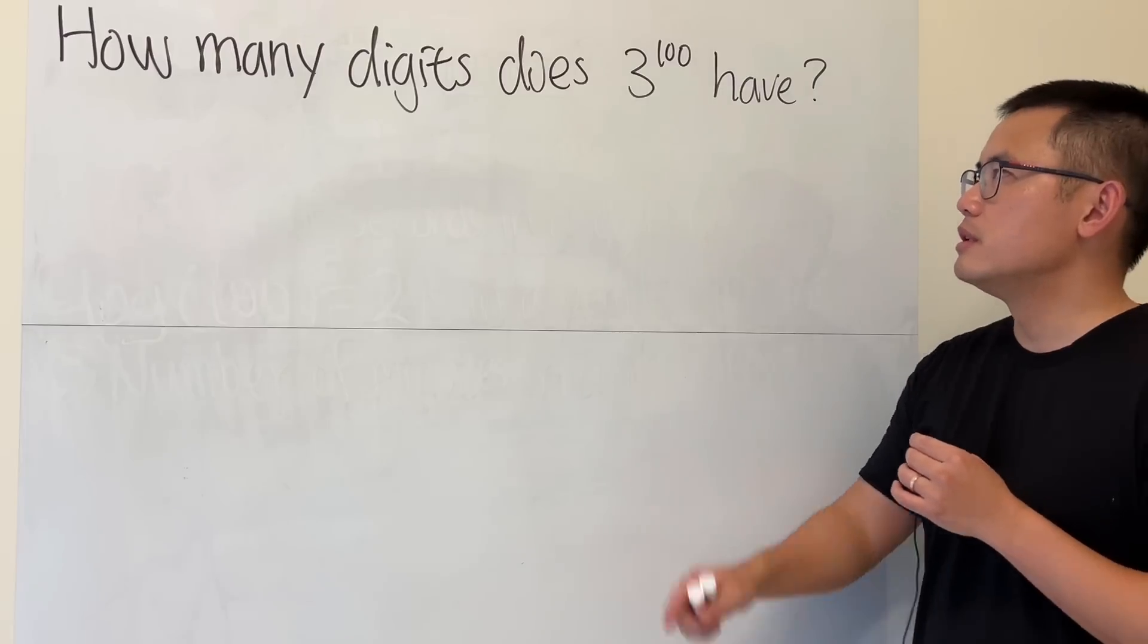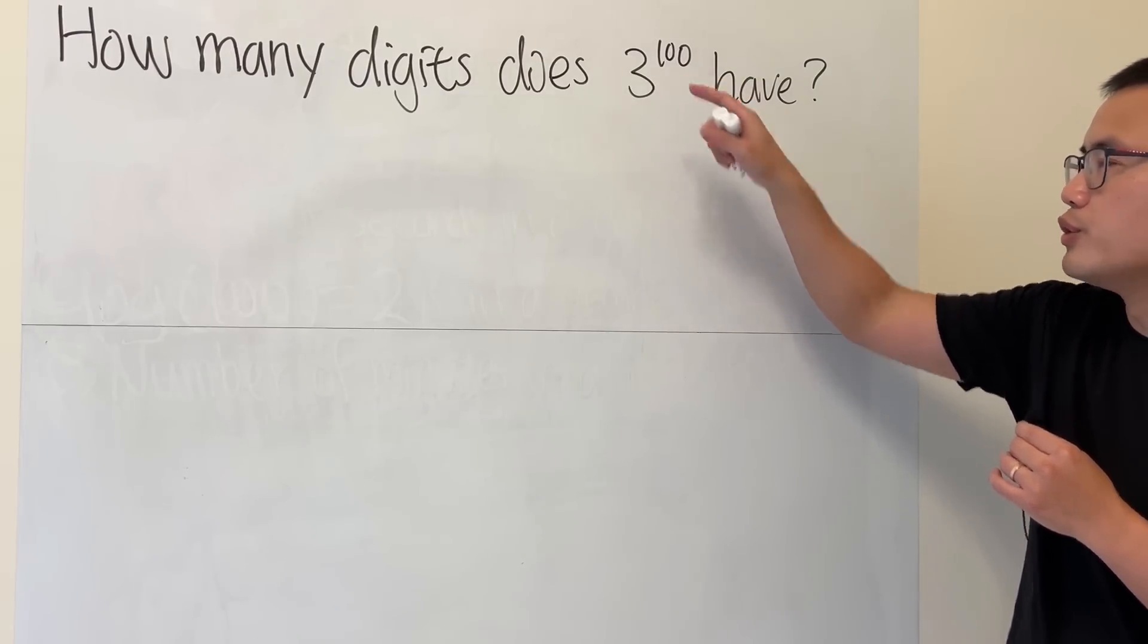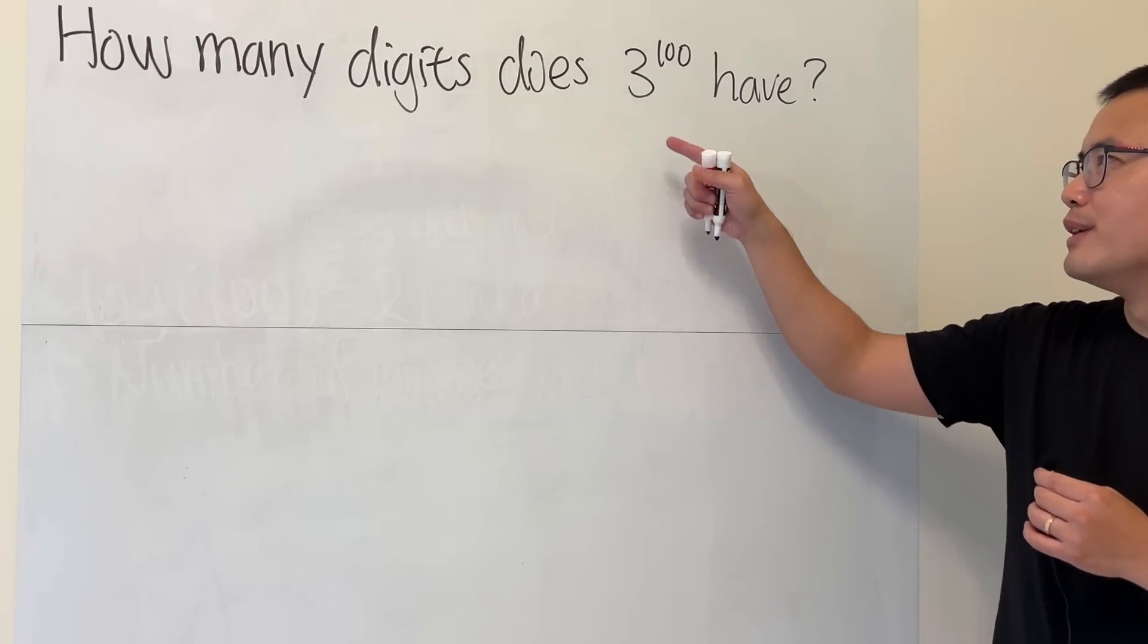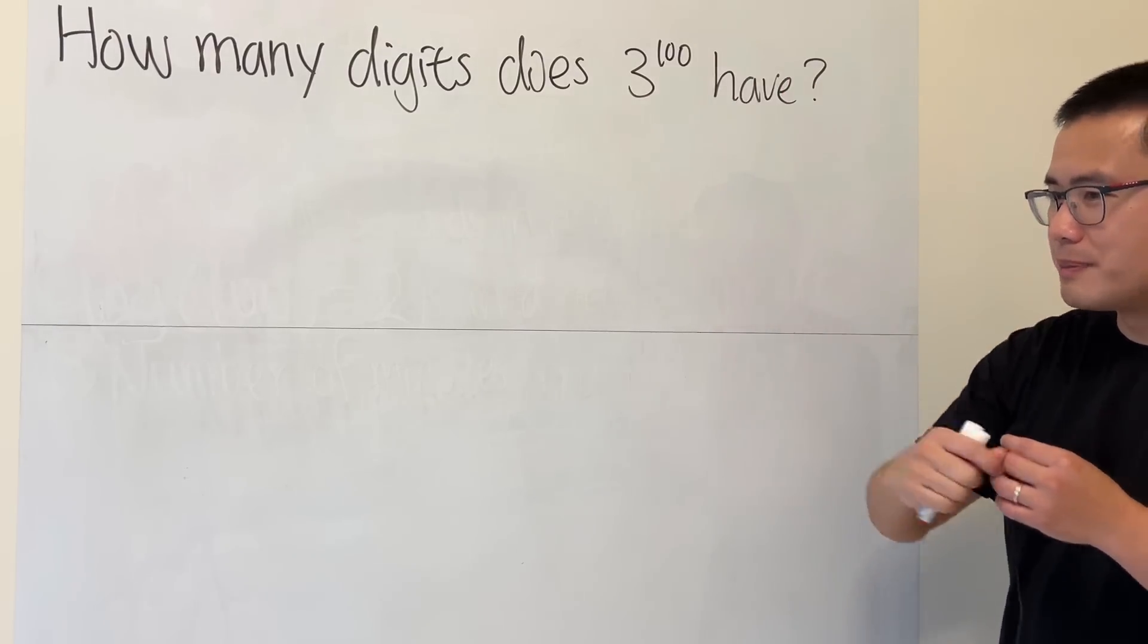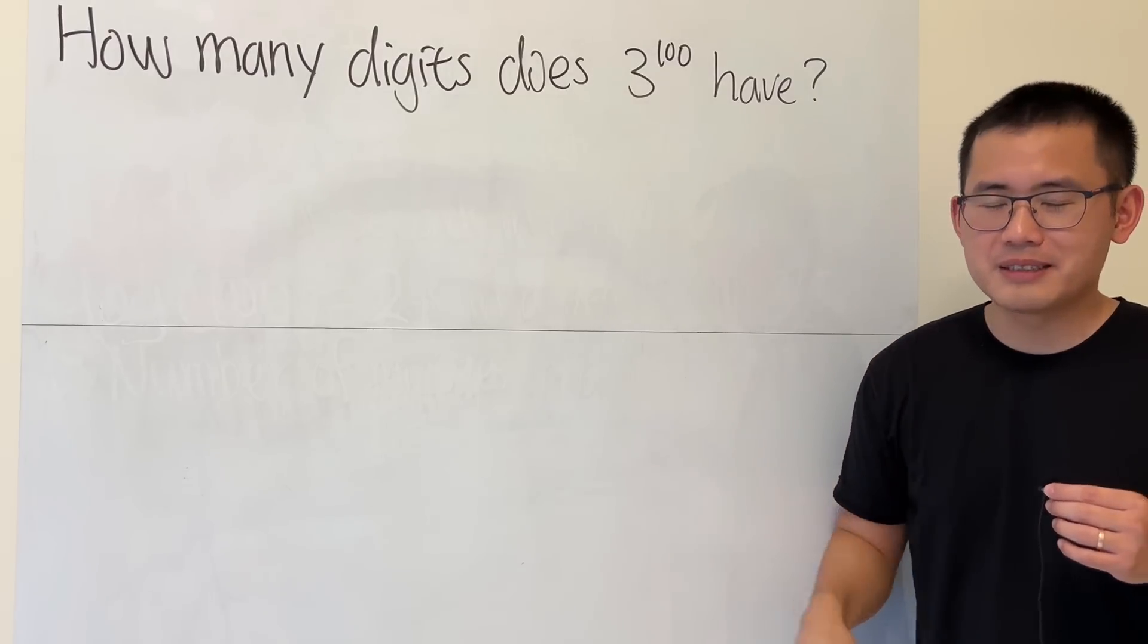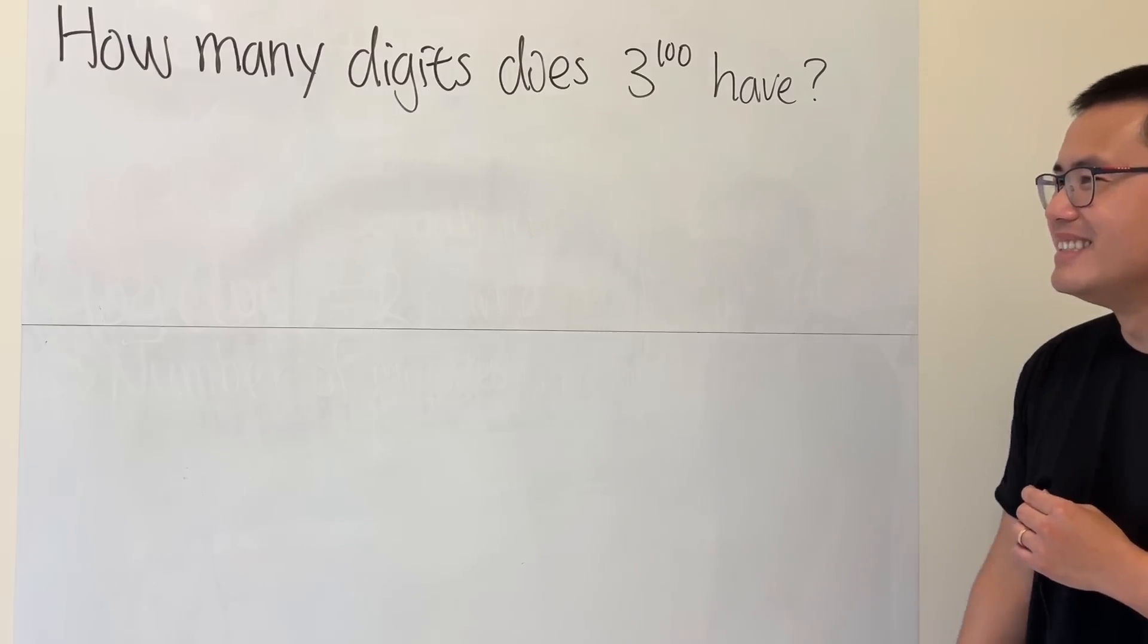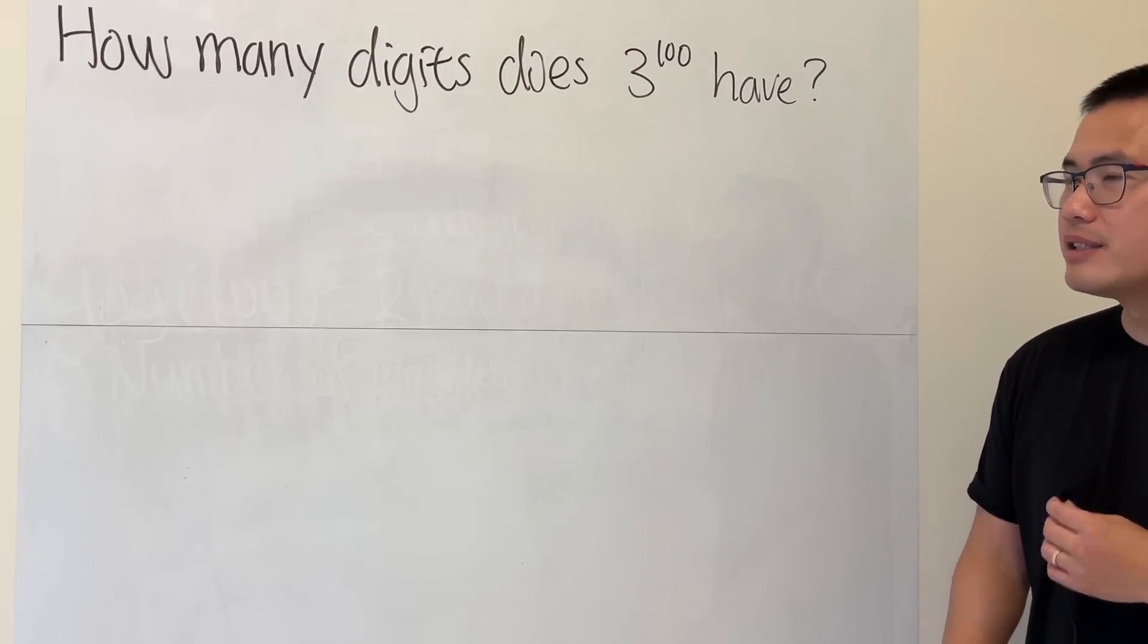We are going to find out the number of digits for the result of 3 to the 100th power. Of course, you can try to use the calculator, right? 3 to the 100th power and then just expand it and count the number of digits, but don't do that. It's a big number, so let's make some observations.